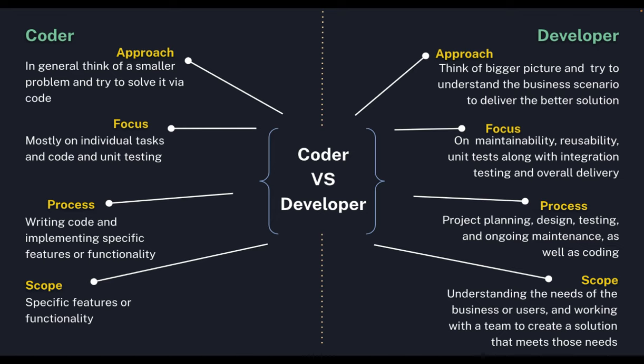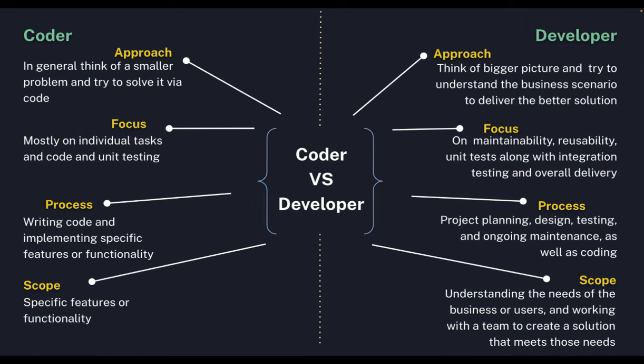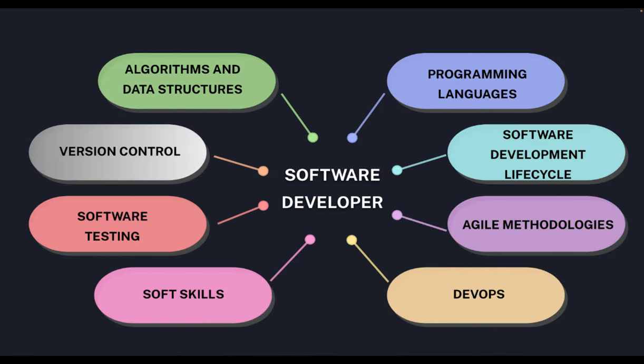A coder is more focused on writing code, testing it via unit tests, delivering it, closing the assigned task, and moving on to the next one. A developer tries to understand different parts of the process. Software development is not only about algorithms, data structures, and programming languages — it involves many more aspects.